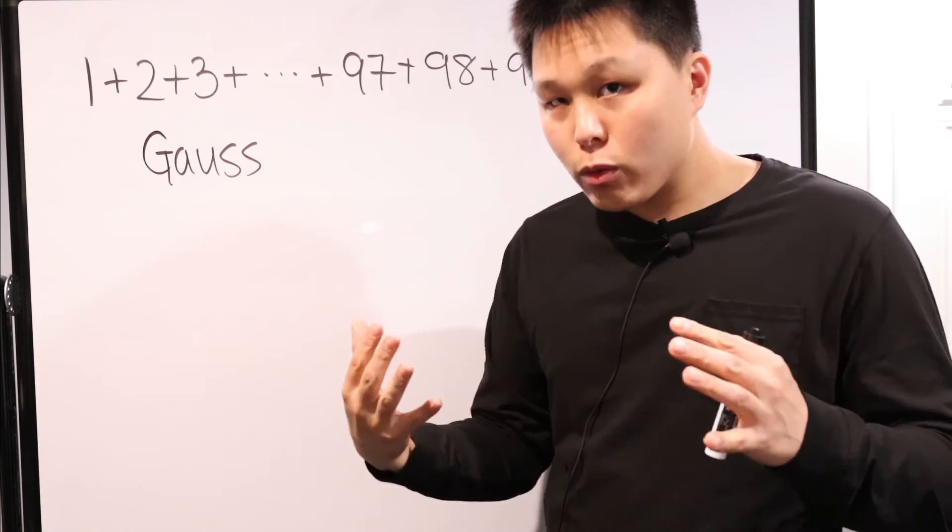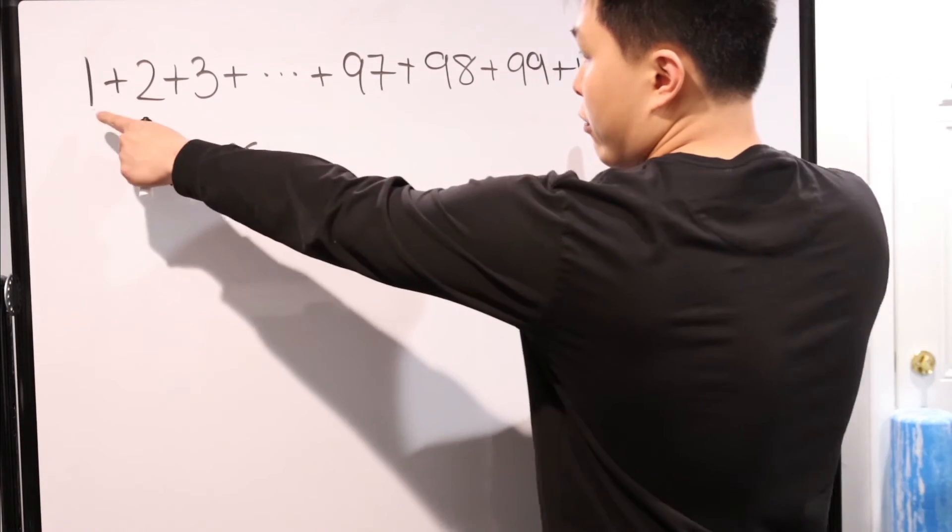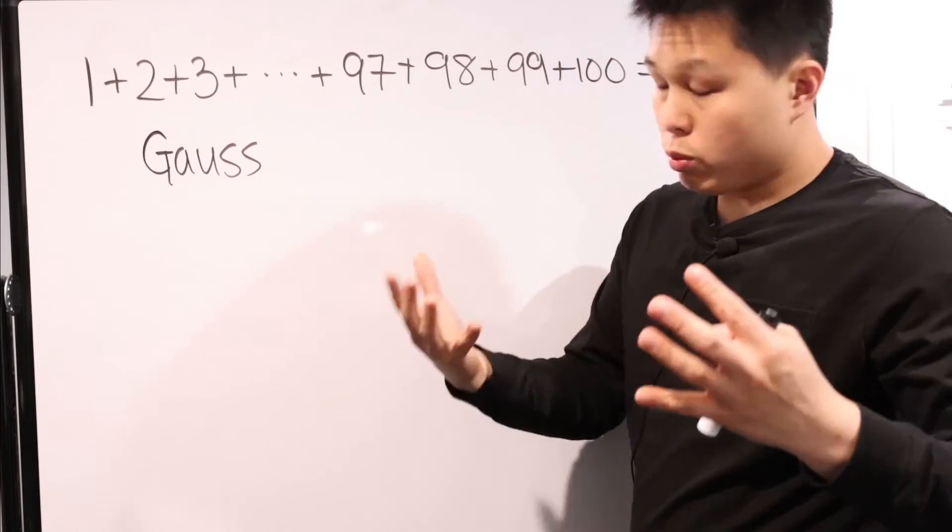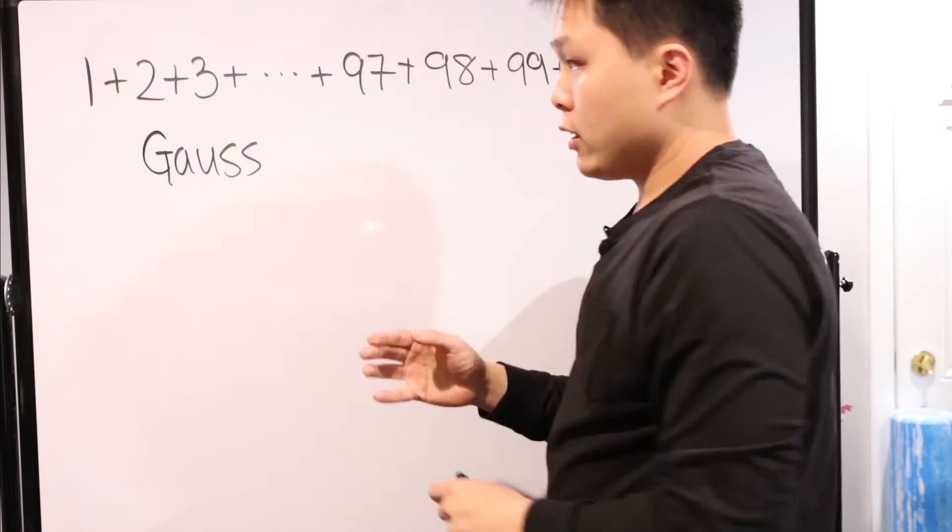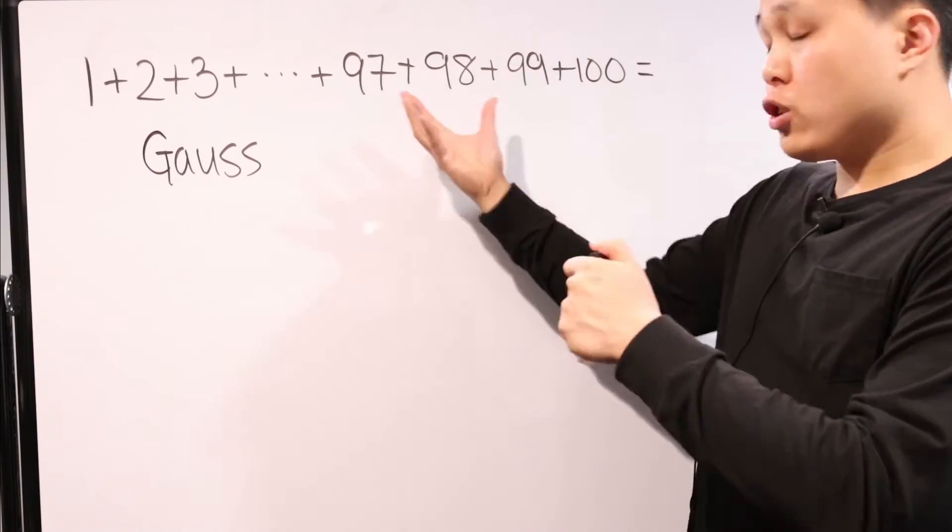So what he did is that he realized that if he did 1 and 99, that's added to 100. 2 and 98 added to 100, and then found out an easier way to solve this problem.